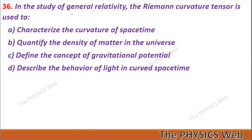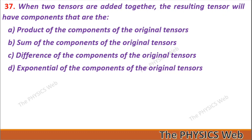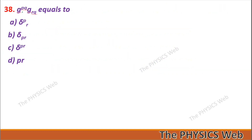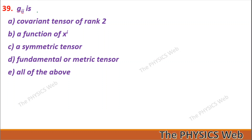Question 36: In the study of general relativity, the Riemann curvature tensor is used to characterize the curvature of space-time — so A is your correct option. Question 37: When two tensors are added together, the resulting tensor has components that are the sum of the components of the original tensors — so B is your correct option. Question 38: g_pq g^rq equals δ_p^r — so A is your correct option. Question 39: g_ij is a covariant tensor of rank 2, it is a symmetric tensor, and it is also known as the fundamental or metric tensor — all of the above options are correct, so E is your correct option.